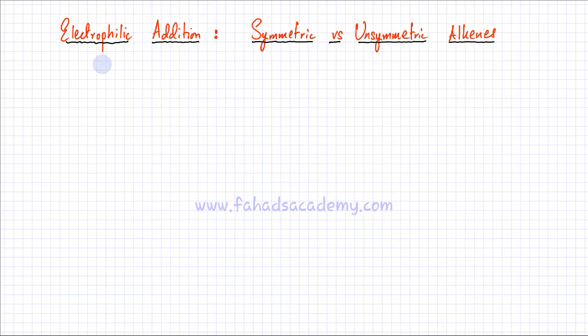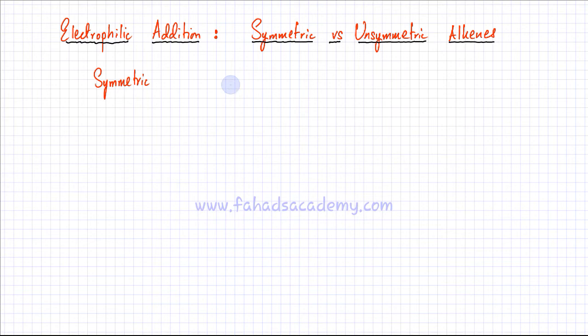The first thing we need to figure out is what is meant by the term symmetric alkene. If you have an alkene and it's symmetric, what that means is that the arrangement of atoms around the carbon-double bond-carbon is going to be exactly the same on the right hand side and on the left hand side.